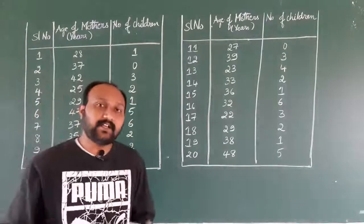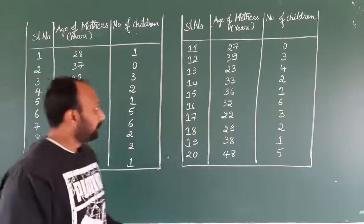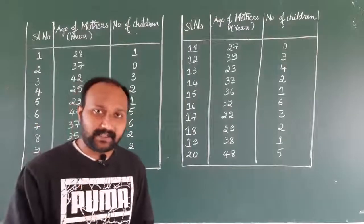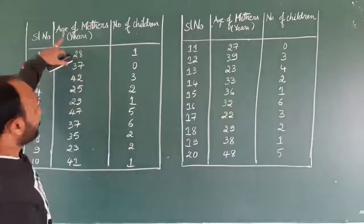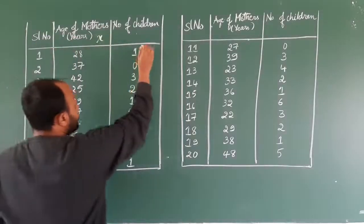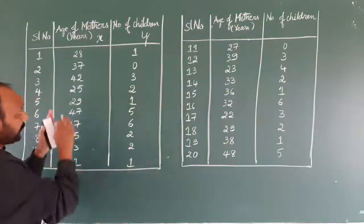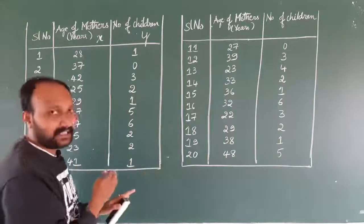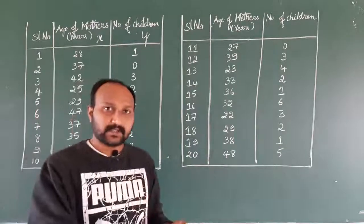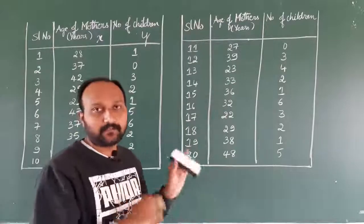So what we will be doing? We need to classify them. Here there are not only one variable involved — there are two variables involved. Age of mothers is one variable, and number of children is another variable. So we need to classify the entire data into a table. We need to follow the rules of classification or principles of classification.